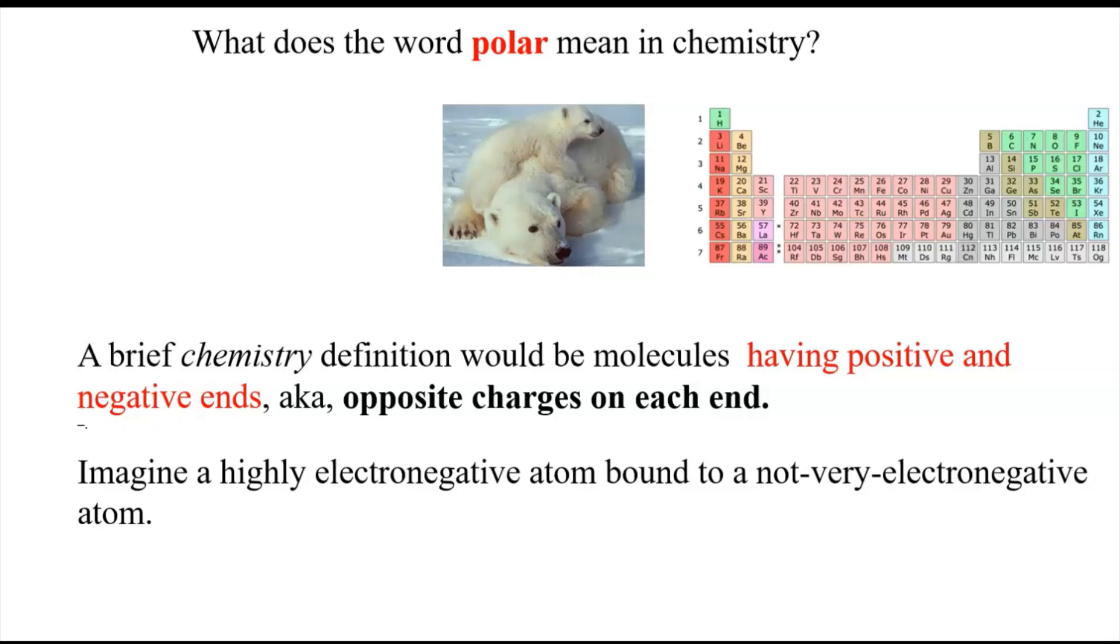We've got a little periodic table up here. Remember the trends as we go from left to right get more electronegative and bottom to top get more electronegative. So we may as well use fluorine as our example of a highly electronegative atom, and way on the other side, we're going to use hydrogen as an example of a not very electronegative atom.